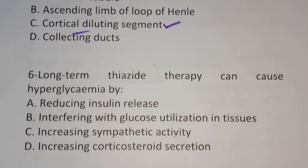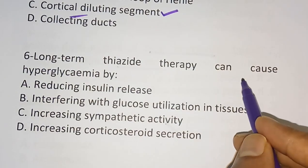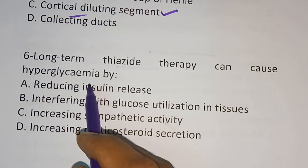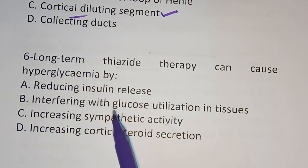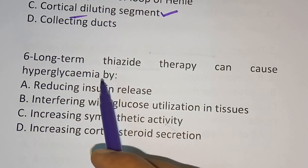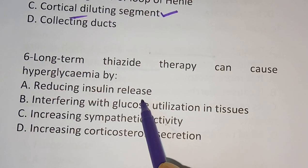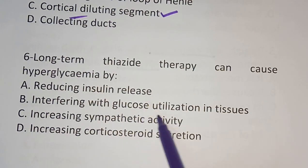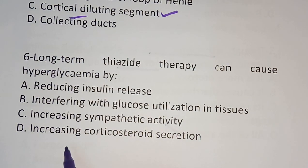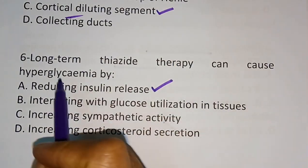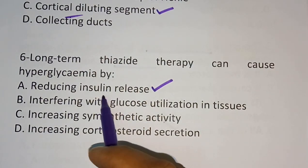Question number six: Long-term thiazide therapy can cause hyperglycemia by which mechanism? Option A: Reducing insulin release. Option B: Interfering with glucose utilization in tissues. Option C: Increasing sympathetic activity. Option D: Increasing corticosteroid secretion. The correct answer is Option A — long-term thiazide therapy causes hyperglycemia by reducing insulin release.